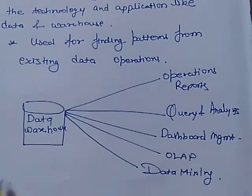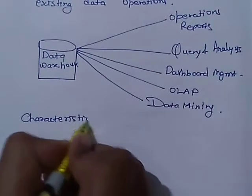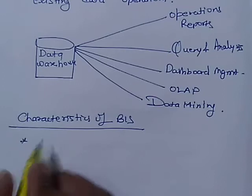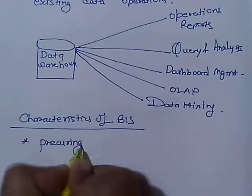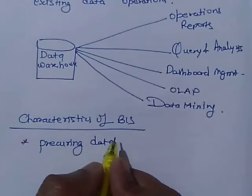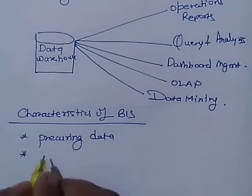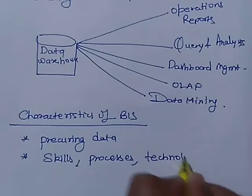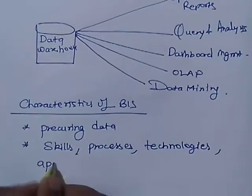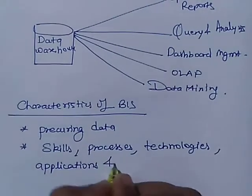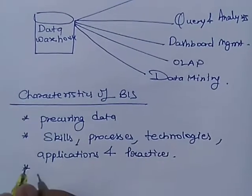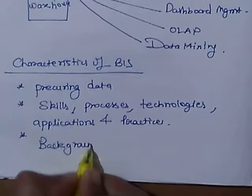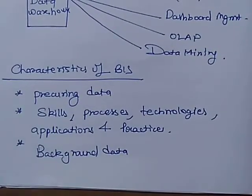Now, what are the main characteristics of the Business Intelligence System? Point number one: it is created by procuring data and information for use in decision making. It is a combination of skills, processes, technologies, applications, and practices. It also contains background data along with reporting tools — meaning background data is also maintained in the Business Intelligence System.